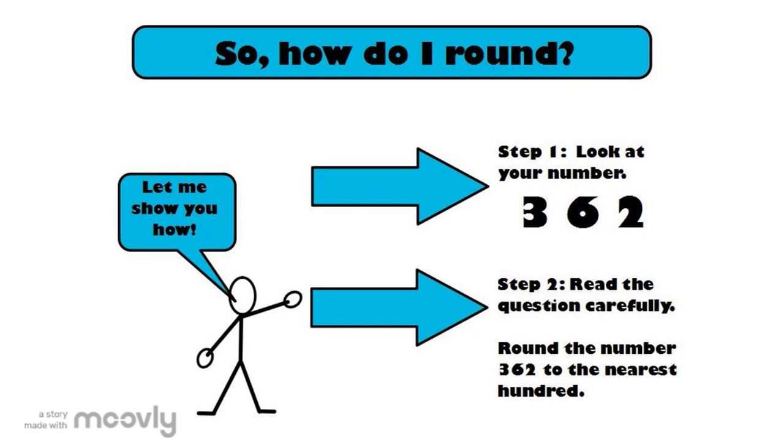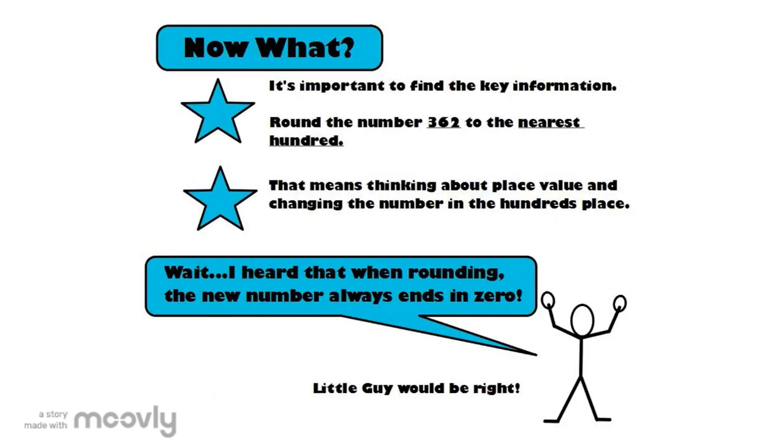Step two, read the question carefully. Round the number 362 to the nearest hundred. It's important to find the key information. That means thinking about place value and changing the number in the hundred's place. And remember, when rounding, the answer always ends in zero.